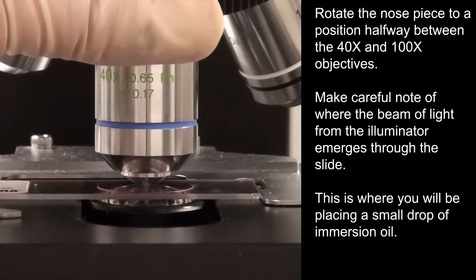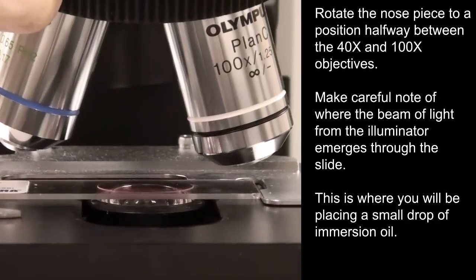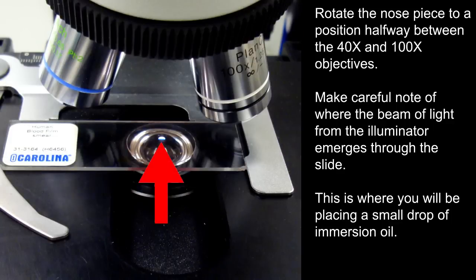Rotate the nose piece to a position halfway between the 40x and 100x objectives. Make careful note of where the beam of light from the illuminator emerges through the slide. This is where you will be placing a small drop of immersion oil.